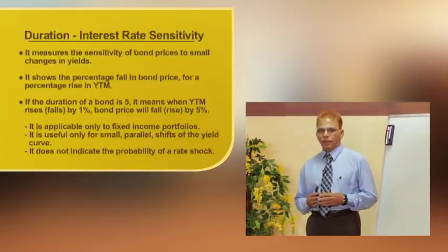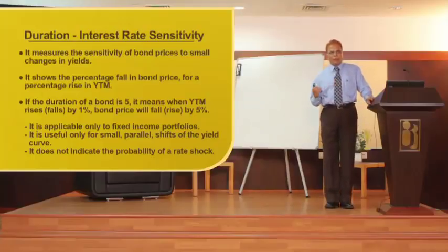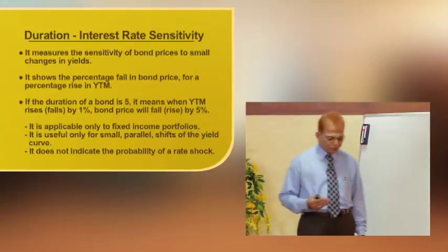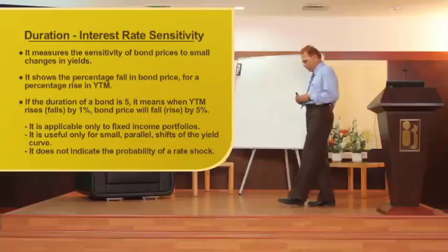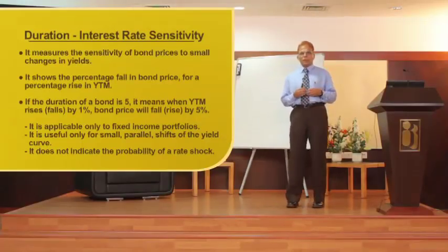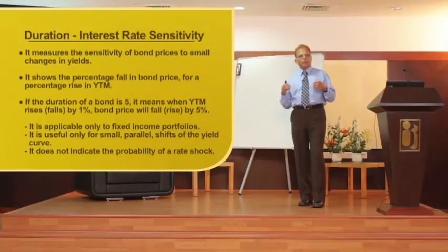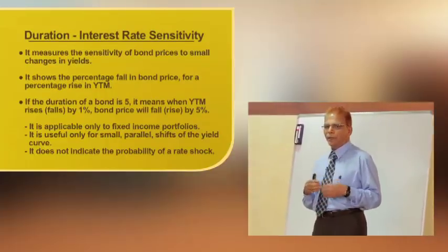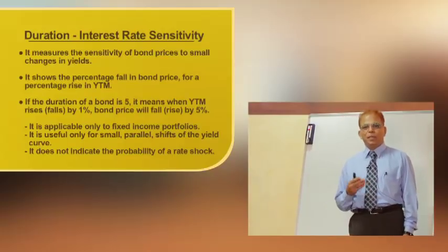The most important risk measure for interest rate sensitivity is duration. In layman's terms, duration indicates the maturity of the bond. This is straightforward in the case of a zero coupon bond, which has no intermediate cash flows. However, for coupon bonds, the intermediate cash flows get reinvested — the coupon payments received may be reinvested at a higher or lower rate than the original investment rate.